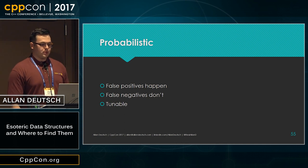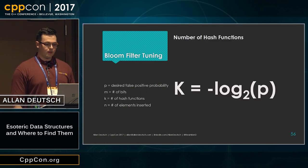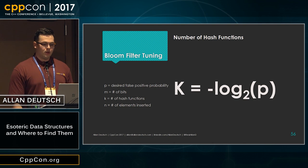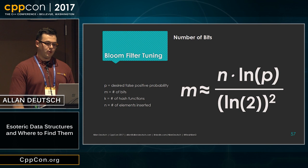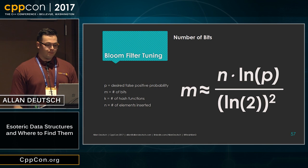That's where the probabilistic part comes in — false positives can happen, but false negatives don't. The amount of these can be tuned. If we have a number of hash functions k, we can set that based on the negative log 2 of p, where p is the desired false probability rate. The other thing you might want to tune is the number of bits m, which is the memory footprint of your bloom filter. Here, m is the number of bits, n is the number of elements inserted, and p is your desired false probability rate — and that's the equation for figuring out how many bits you want.